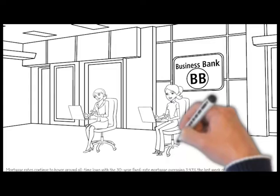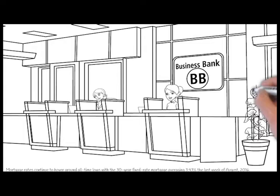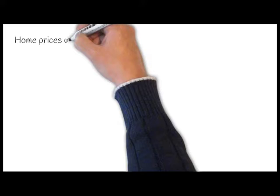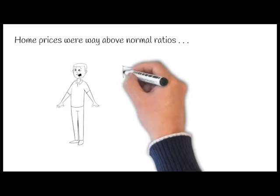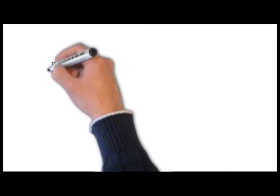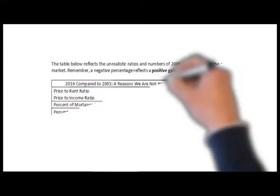Recent research by Realtor.com examined certain red flags that caused the housing crisis in 2005 and compared them to today's real estate market: price to rent ratio, price to income ratio, mortgage transactions, and house flipping. Home prices were way above normal ratios when compared to both rent and incomes at that time. Mortgage transactions as a percentage of all home sales were also at a higher percentage. House flipping was rampant in 2005. The table below reflects the unrealistic ratios and numbers of 2005 as compared to the current market.